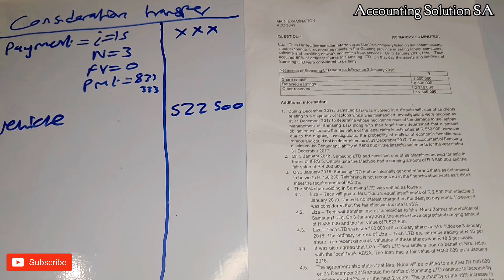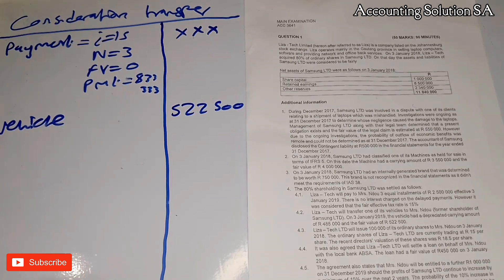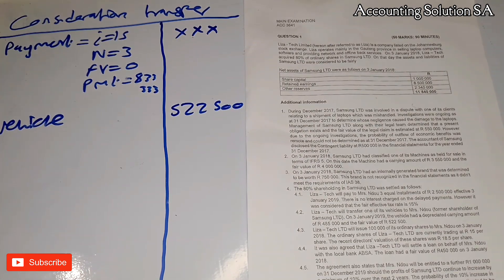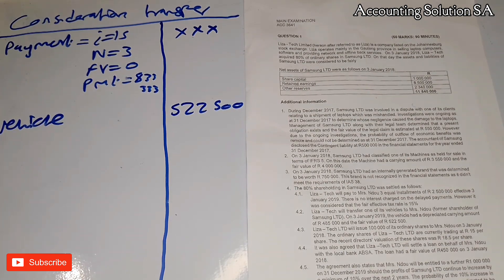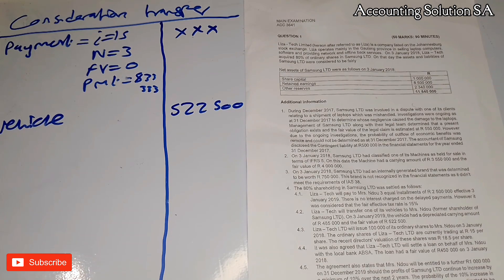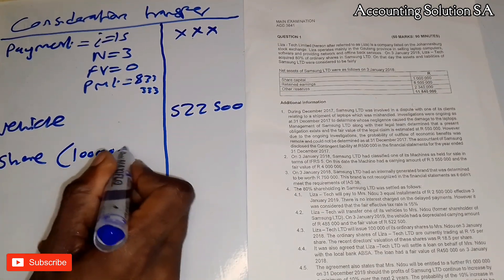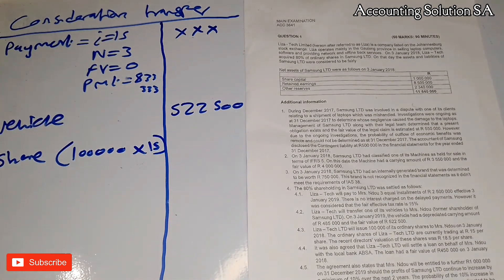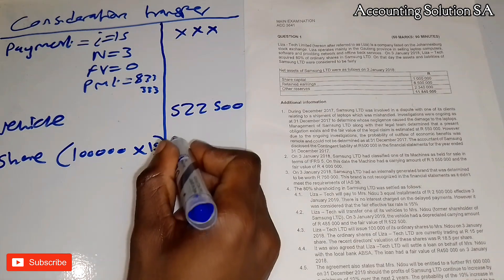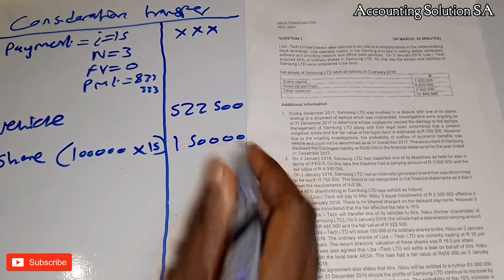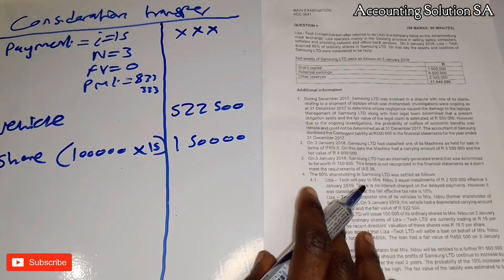Note 4.3 says LaserTech Ltd will issue 100,000 ordinary shares. On 3 January 2018, the ordinary shares of LaserTech are currently trading at 15 Rand per share — that is the external market value. A recent direct valuation is 18 Rand 50 cents per share. Since we are dealing with an external case, we use the currently trading price of 15 Rand, giving us 100,000 × 15 Rand = 1.5 million. We would use 18 Rand 50 cents only if it were an internal case.